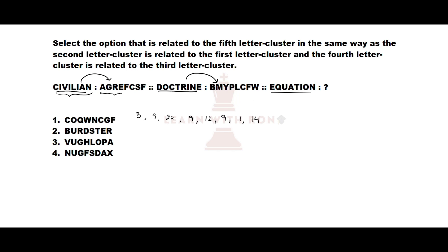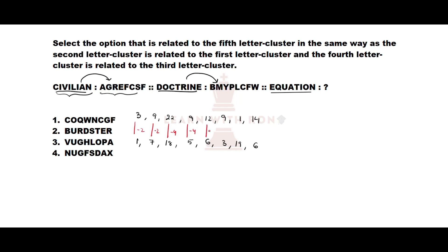The coded cluster for 'civilian' gives: A=1, G=7, R=18, E=5, F=6, C=3, S=19, F=6. Observing the differences: 3−2=1, 9−2=7, 22−4=18, 9−4=5, 12−6=6, 9−6=3, 27−8=19, 14−8=6. The pattern is subtracting 2, 2, 4, 4, 6, 6, 8, 8 from each letter's number value.